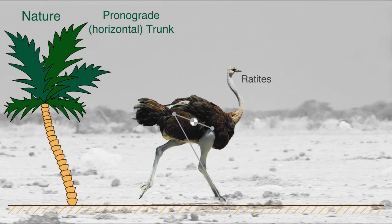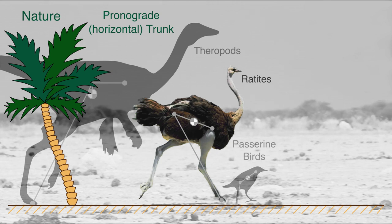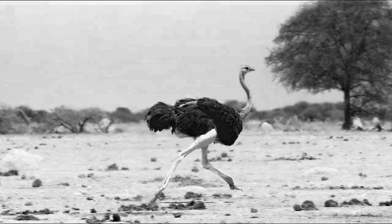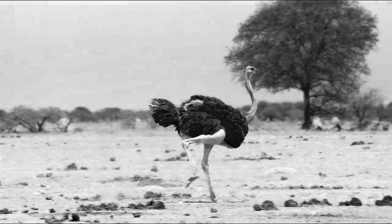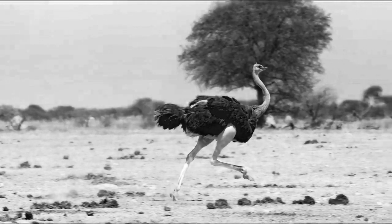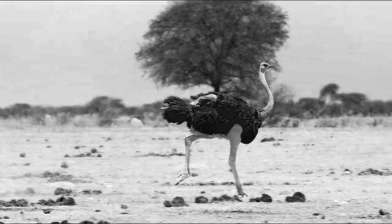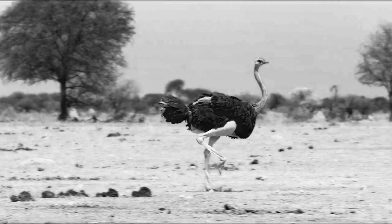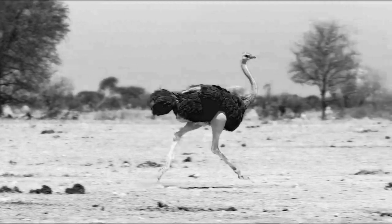Nature offers various solutions to bipedalism, ranging from avians and theropods with a pronograde trunk posture to humans with an orthograde trunk posture. Terrestrial birds in particular display exceptional locomotion capabilities where they exploit the interplay between body segment masses, momentum, and inertias.